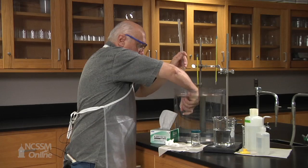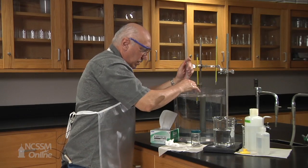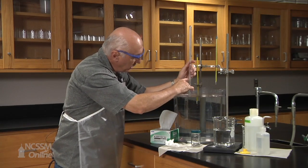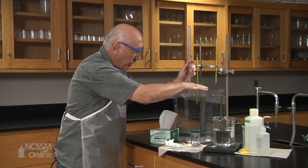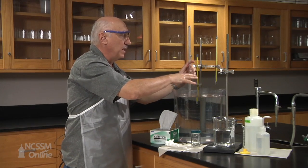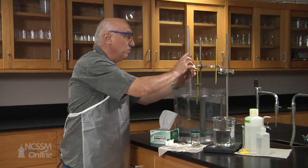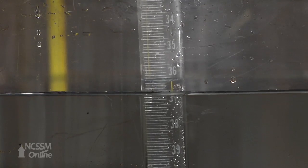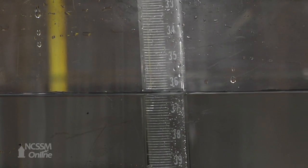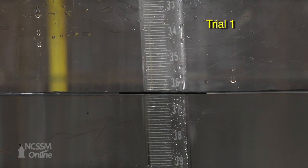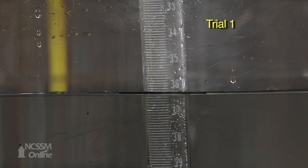And we're going to adjust the meniscus in the tube with the level of water here so that we ensure that the atmospheric pressure inside the test tube matches the atmospheric pressure outside. And now the two liquids are at the same level.